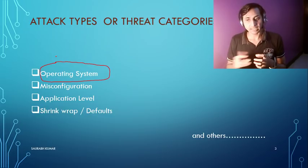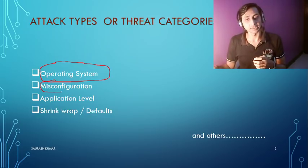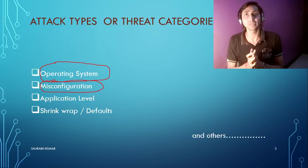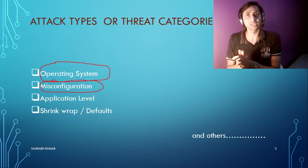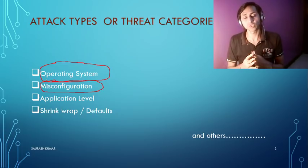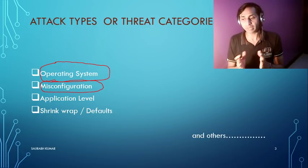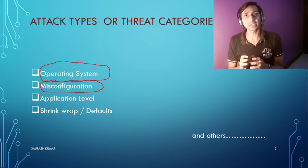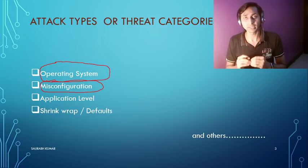The second attack type is misconfiguration. Whenever you have any program or device whose configuration is not perfect and you cannot be 100% confident it is secure, that can lead to an attack. Whenever you have a device with many different configuration options, make sure they are configured properly to enhance security and reduce vulnerability.